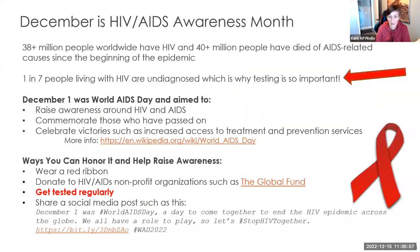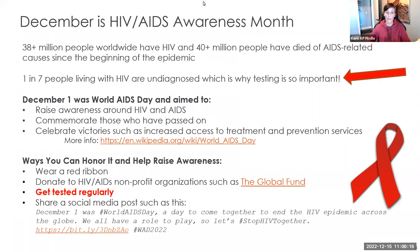As I typically do every month, I highlight an awareness month or celebration. This month we're raising awareness around HIV and AIDS. 38 million people have been diagnosed with HIV, and 40-plus million people have died of AIDS since the epidemic started in the 1980s. Startlingly, one in seven people living right now have HIV and don't know it — which is why the number one thing this December is to get tested and retested over time.